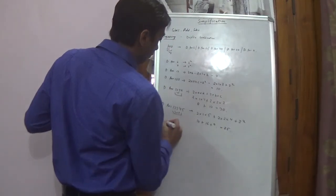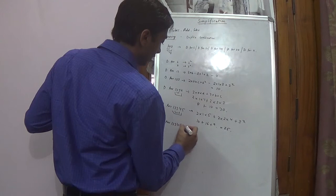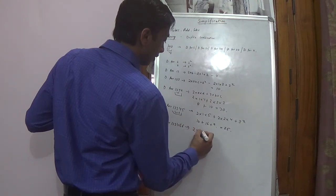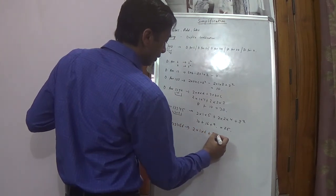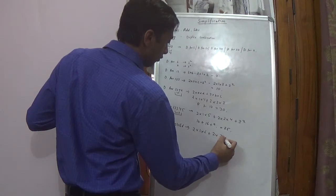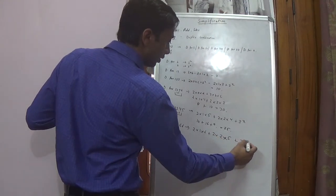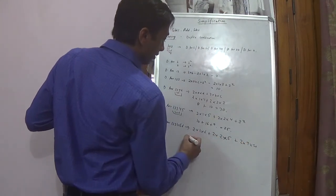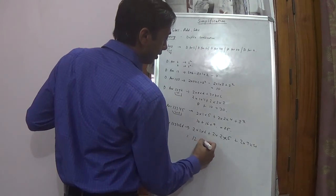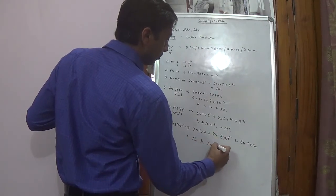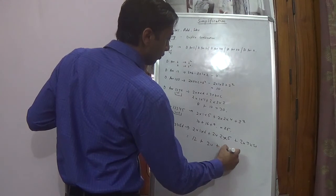For 6 digits — 1, 2, 3, 4, 5, 6 — the duplex is 2 into 1 into 6, plus 2 into 2 into 5, plus 2 into 3 into 4. So that gives 12 plus 20 plus 24.